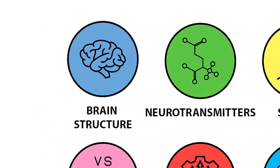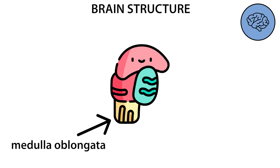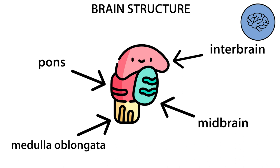Brain structure. The brain is divided into symmetrical left and right hemispheres and the brainstem. The first part of the brainstem is the medulla oblongata. There is the pons above it, then the midbrain and the largest part of the brainstem, the interbrain.